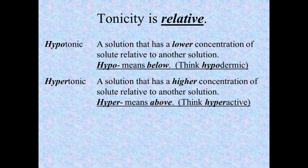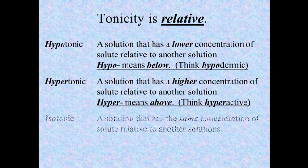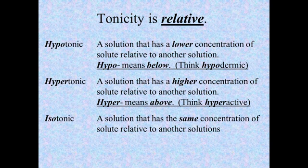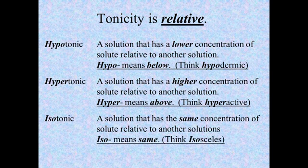So we have hypo meaning below, hyper meaning above, and the third possibility is isotonic, meaning it is the same concentration. Two glasses of iced tea that are the same concentration — whether they're strong or weak or normal — if they're the same as each other, we say they are isotonic to each other. They're at the same level of solute concentration. An isosceles triangle is an example of use of that iso prefix.